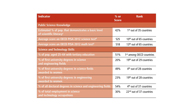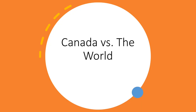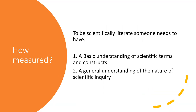Tertiary education — so secondary is high school, tertiary is post-secondary — could be a combination of college and/or university, not just solely university. They define science literacy in fairly basic terms: to be scientifically literate, someone needs to have a basic understanding of science terms and constructs and a general understanding of the nature of scientific inquiry. If you think back to the Lou article, you'll know this is a very basic definition, and that by and large we use other types of recommendations and scales for looking at science literacy.